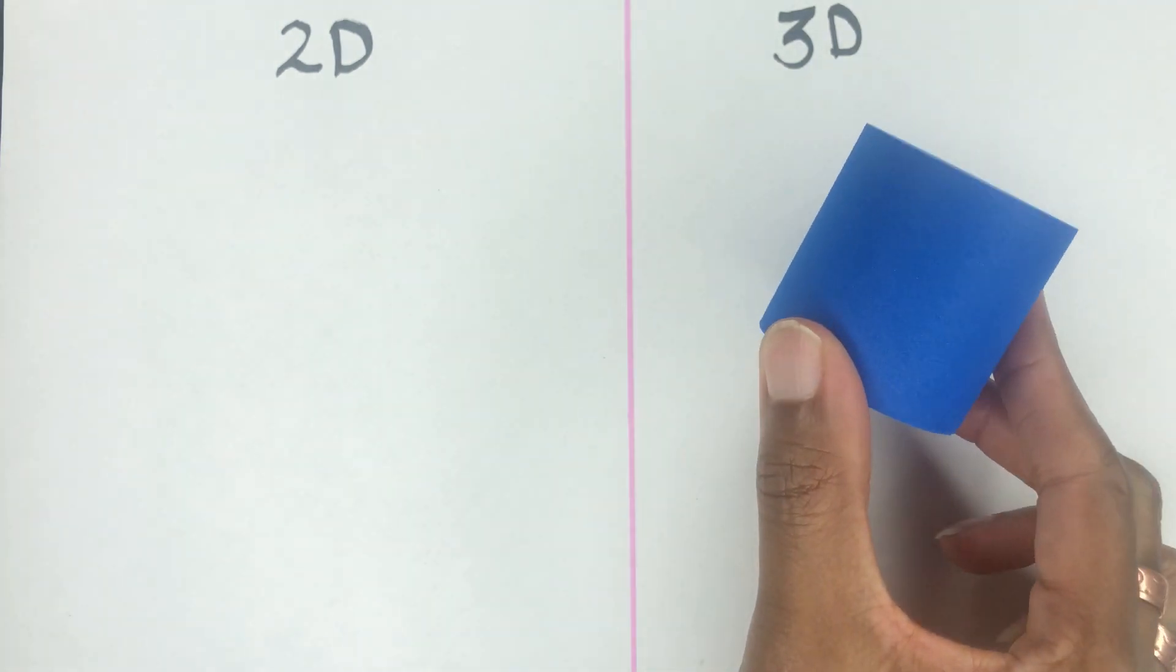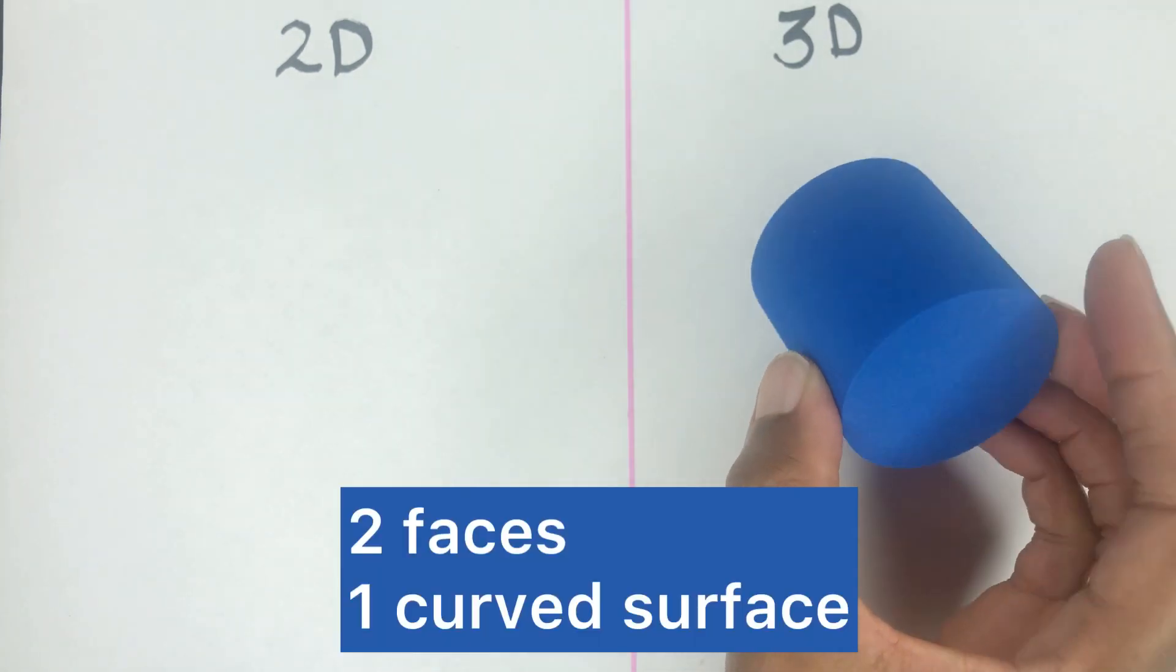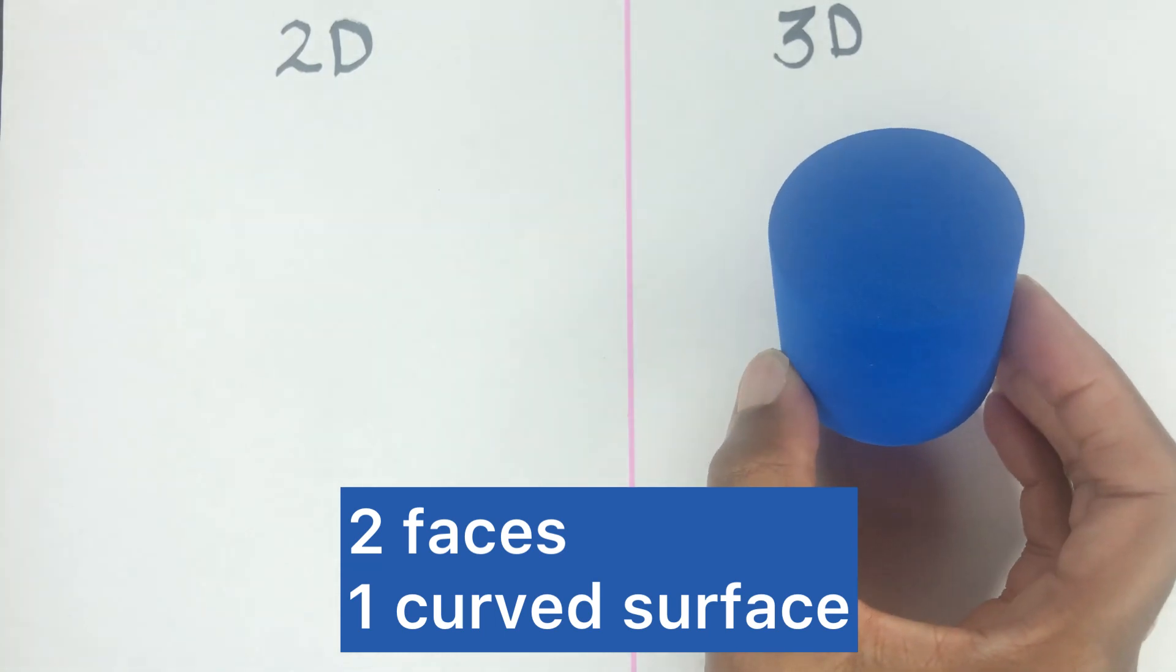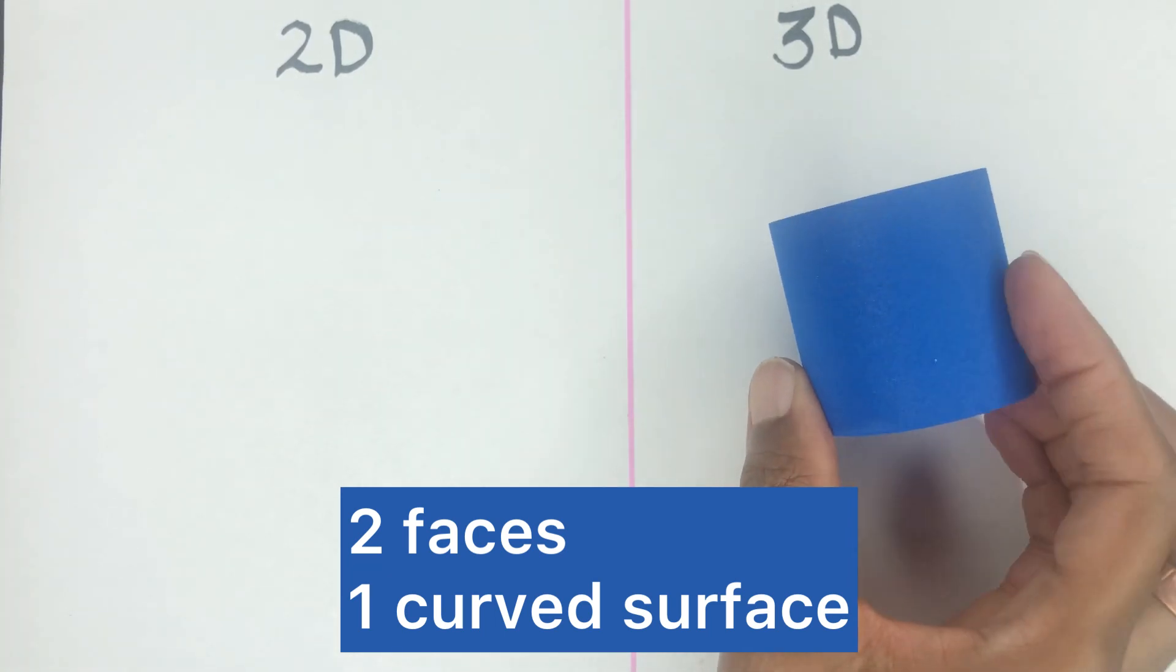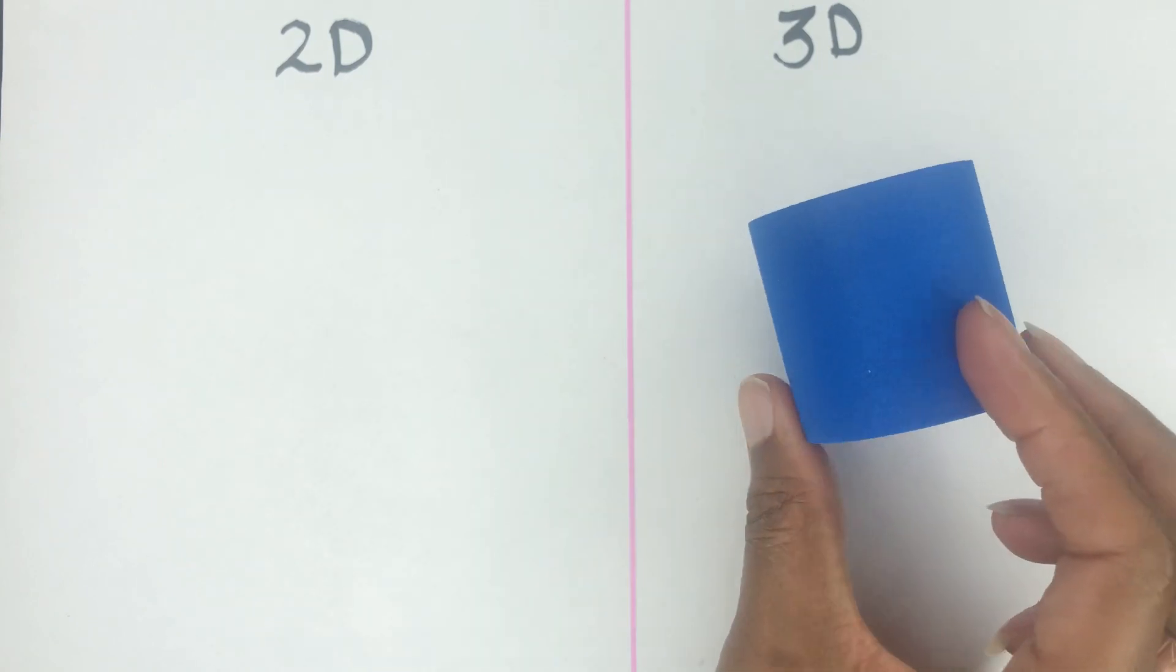A cylinder. The cylinder has two faces and one curved surface which serves as the body all around the middle.